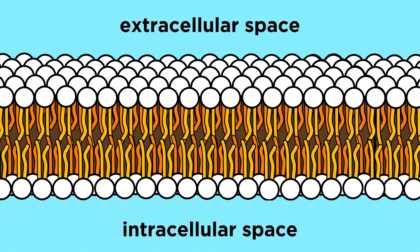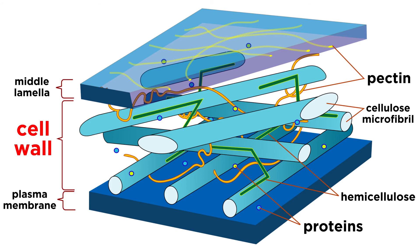And lastly, unlike animal cells, which possess only a plasma membrane to separate the intracellular space from the extracellular space, plants possess a cell wall in addition to the plasma membrane. This wall, which is much thicker than the membrane, protects the cell, maintains its shape, and further regulates what goes in and out. The wall is made of a matrix of polysaccharides, like cellulose, as well as some proteins.